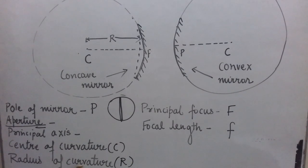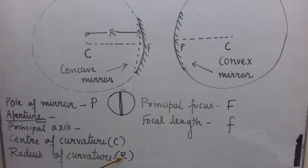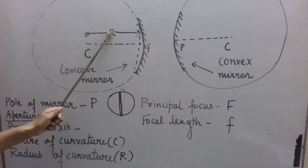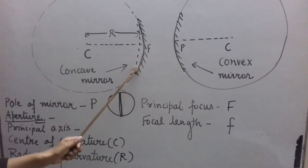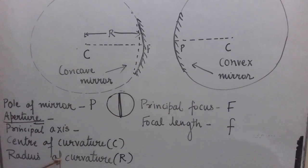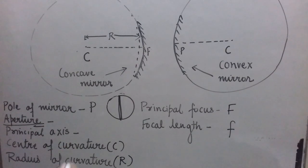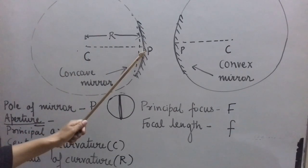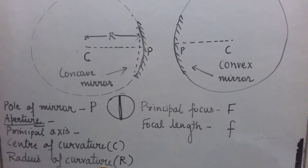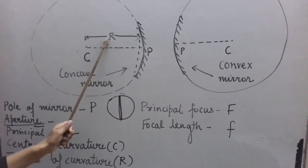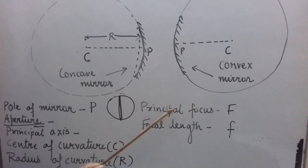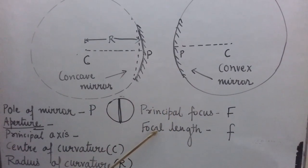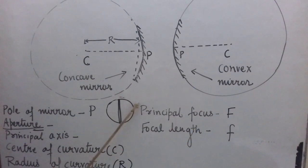Next is the radius of curvature, represented by capital R. The radius of the hollow glass sphere of which the mirror forms a part is called its radius of curvature. In other words, the distance between the centre of curvature and the pole of a spherical mirror is called its radius of curvature R. Two more terms remain: principal focus (F) and focal length (f), which we will study now.